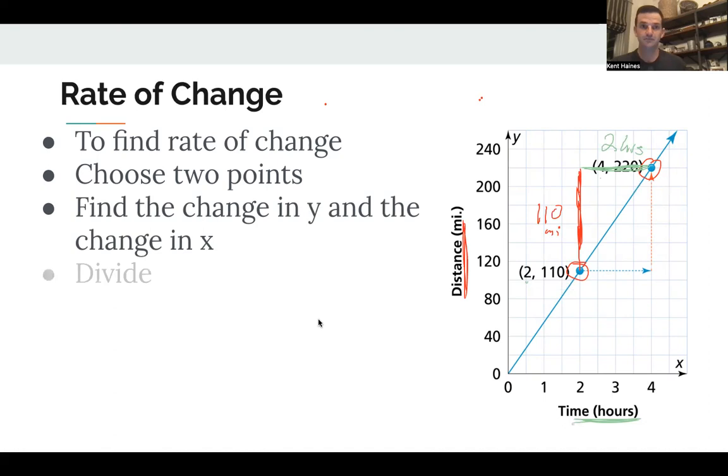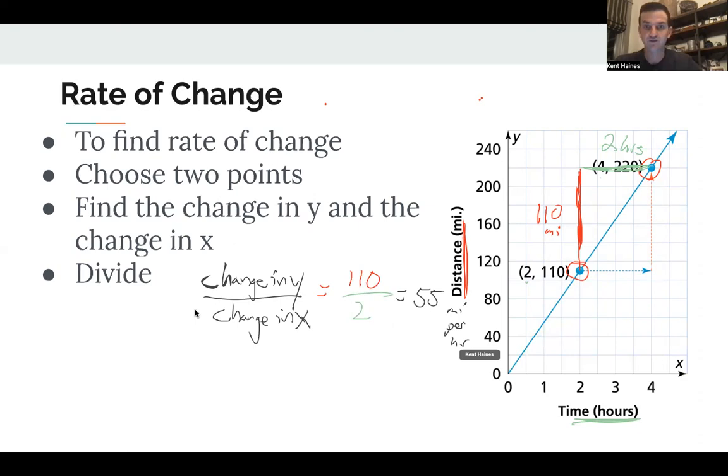So I found the change in Y and the change in X, and then we simply divide. And the way we divide, we always divide the change in Y divided by the change in X. That's just always how slope is calculated. You will see that 100% of the time. So here that would be 110 divided by two. And so our rate of change here would be 55 miles per hour. So that's how you find rate of change, just change in Y divided by change in X. And how do you figure out change in Y and change in X? Well, you need two points to figure it out. You can't find slope from one point because you don't know how fast Y is going up and how fast X is going up and that sort of thing.